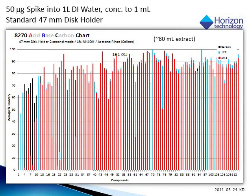Here is the recovery chart from the demonstration sample. The compounds are shown by elution order off the GC. The acids and neutrals are depicted by the red bars, the compounds captured by the carbon cartridge are shown in black, while the blue bars are the organic bases. Overall recoveries are excellent, and light ends are captured exceedingly well compared to liquid-liquid extraction, including the phenols.